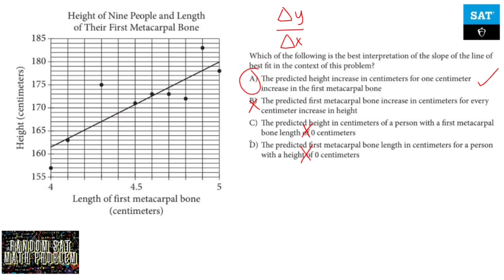It is A because as you increase your first metacarpal bone, you increase in height, not the other way around, which B is the opposite of that. So we're going to go with A.